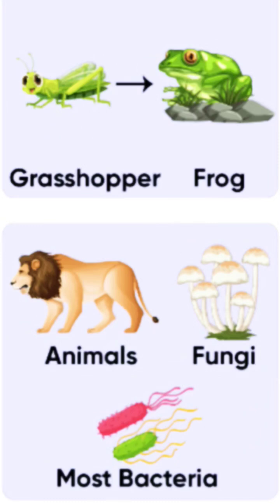All heterotrophs first convert the solid food into soluble compounds. All animals and non-photosynthetic plants come in the category of heterotrophs. In the food chain, heterotrophs are placed as secondary or tertiary consumers. Examples of heterotrophs include animals, fungi, and many bacteria.